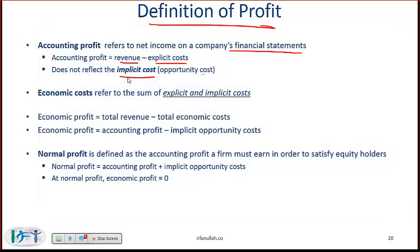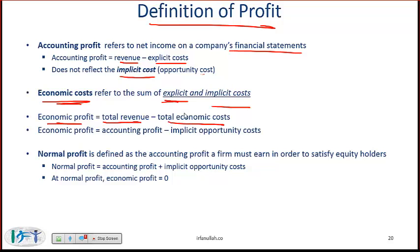Accounting income would ignore those costs, but economic income does not. Economic costs refers to the sum of explicit and implicit costs — it is a more meaningful number to look at. The economic profit then is total revenue minus the total economic costs, which includes both implicit and explicit costs.